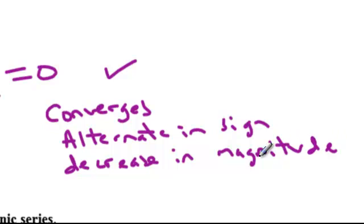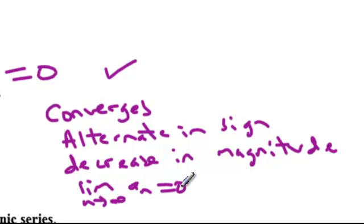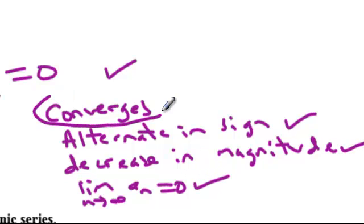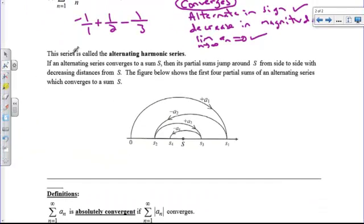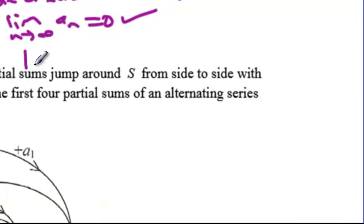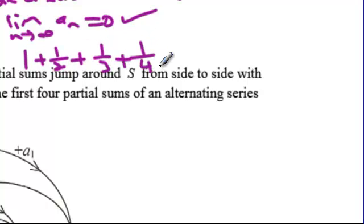The limit as n approaches infinity of the sequence is 0, and all three things must be true before you can say it converges. This is called the alternating harmonic series. The regular harmonic series — 1 plus 1/2 plus 1/3 plus 1/4 — diverges. But the alternating harmonic series converges.